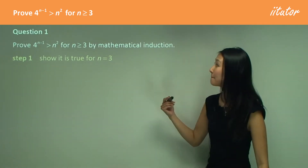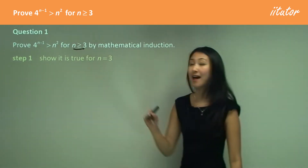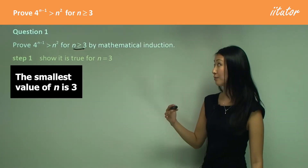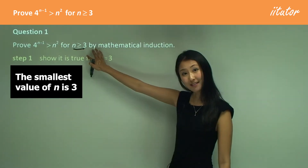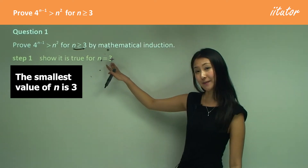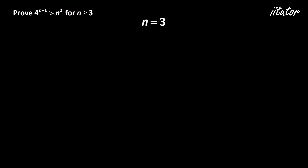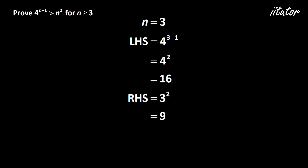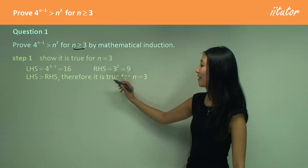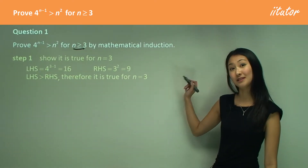In step one, we're used to using n equals to 1. But here, it specifies that n must be greater or equal to 3. So we want to use the smallest number in that, which is n equals to 3. So we want to show it's true for n equals to 3. Our left hand side equals 4 to the power of 3 minus 1, that's 4 squared, which equals to 16. And our right hand side is just 3 squared, which equals to 9. So therefore, 16 is greater than 9, so left hand side is greater than right hand side. Therefore, it is true for n equals to 3.